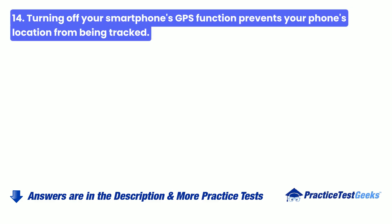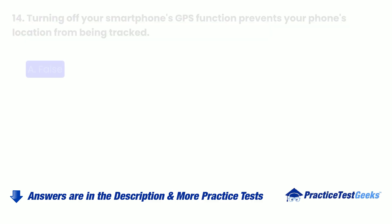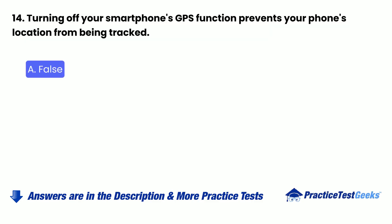Question 14: Turning off your smartphone's GPS function prevents your phone's location from being tracked. a. False. b. True.